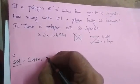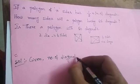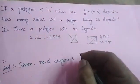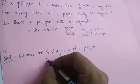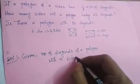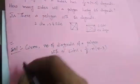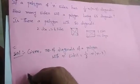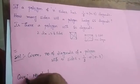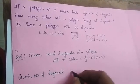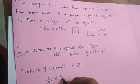Given: the number of diagonals of a polygon with n sides is equal to (1/2) × n × (n-3). We are given that the number of diagonals is 65. So we set (1/2) × n × (n-3) equal to 65.